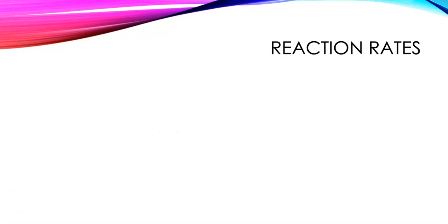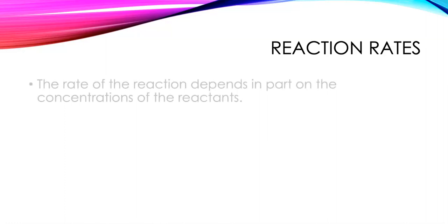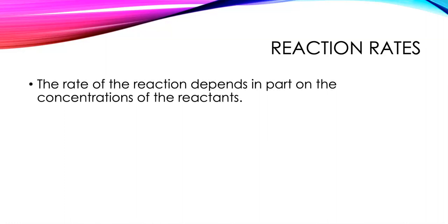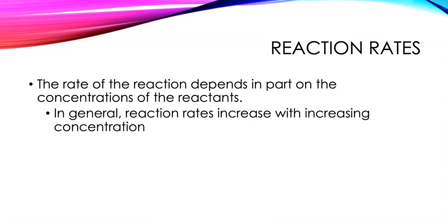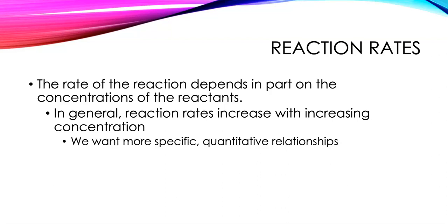Chemists spend a lot of time talking about reaction rates, and we know from collision theory that the rate of the reaction depends in part on the concentration of the reactants. In general we know that when concentration of reactants increases, reaction rates also increase. But that's too general a statement — we really want very specific quantitative information about this relationship: how does it increase, does it always increase, and what could explain this?